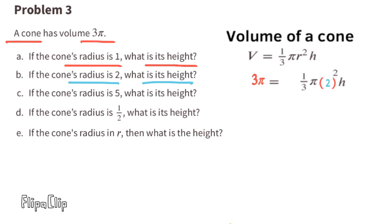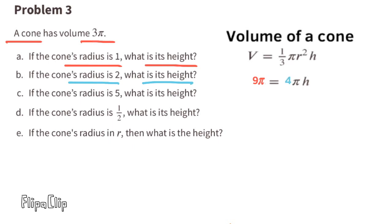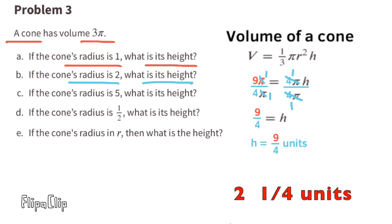Part b: If the cone's radius is 2, what is its height? We substitute r with 2 and multiply both sides by 3. 3 times 3 pi is 9 pi, and 3 times 1/3 pi is 1 pi. The equation reads 9 pi equals pi times 2 squared times h, or 9 pi equals 4 pi times h. Dividing both sides by 4 pi gives 9/4. The height of this cone is 9/4 units, or 2 and 1/4 units.